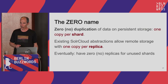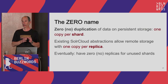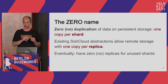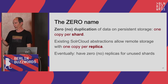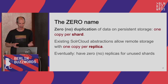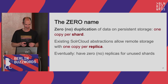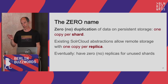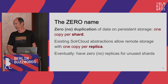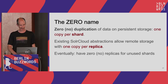The Zero name comes from two things. First, there is zero duplication of data — we store one copy per shard. Existing abstractions for remote storage in SolrCloud, such as HDFS Directory that can use S3, store one copy per replica; we store one copy per shard. And eventually, we want to get to having no replicas at all for indexes that are not in use, which would increase scalability greatly.